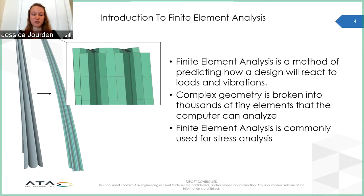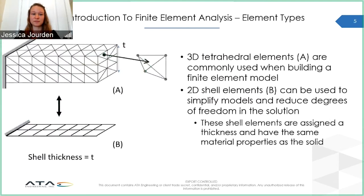An example of a mesh is shown here in green. The easiest way to mesh a complex shape is to use 3D tetrahedral elements, since they can be oriented to fit curves and odd shapes. Simulations using these elements can take a long time to solve if the model is large. Instead, for some geometry, we can use 2D shell elements to simplify the model and reduce the degrees of freedom, and thus reduce the solve time for the solution.